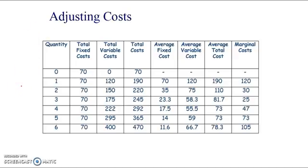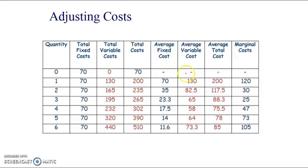So changes in fixed costs shift the average cost curve — upwards for an increase, downwards for a decrease — but have no impact on marginal costs or the profit-maximising output, though they do reduce supernormal profit. Now what happens when variable costs are adjusted? Total variable costs change somewhat differently. Total costs change because we add total fixed and variable costs. Average variable costs and average total costs change. And crucially, marginal costs have actually increased as well.